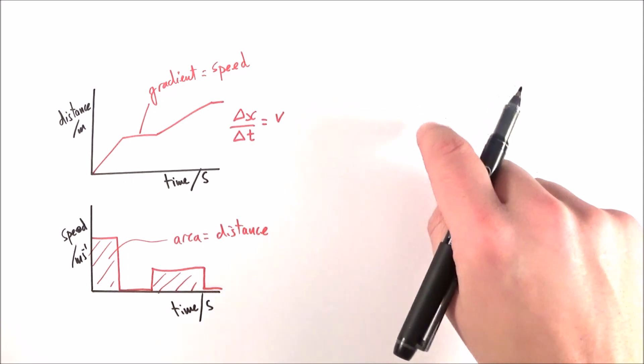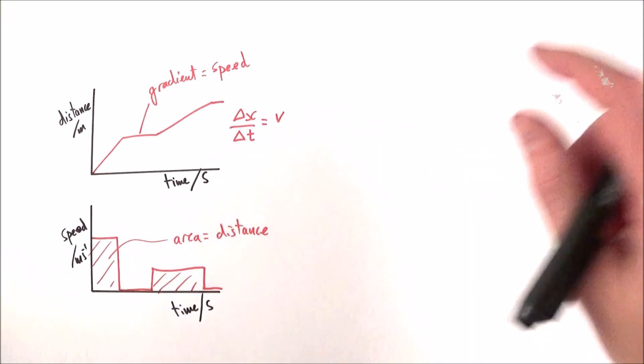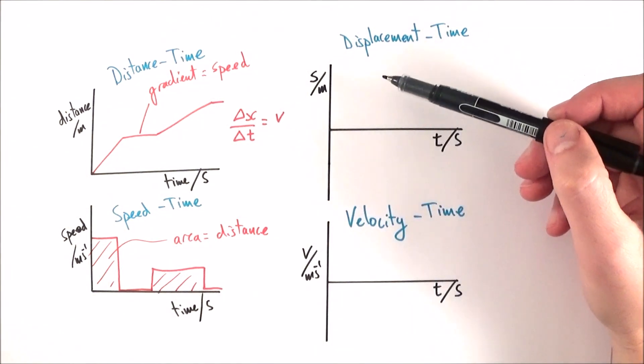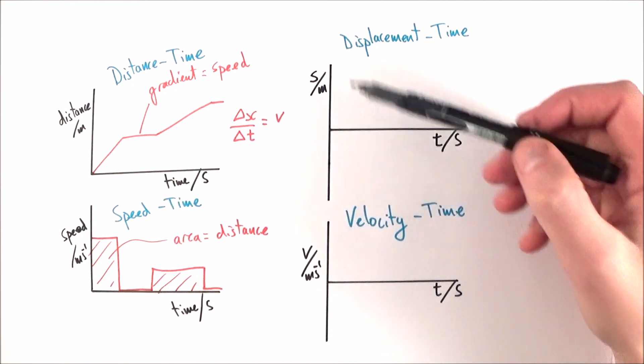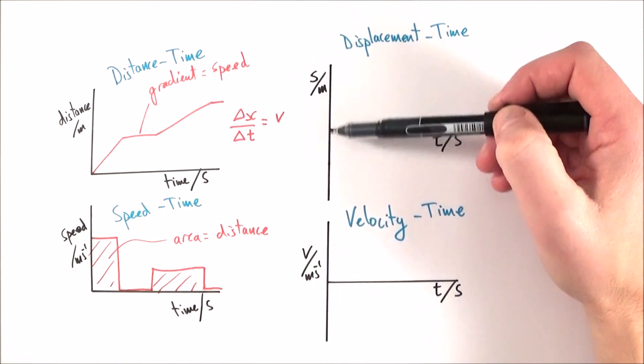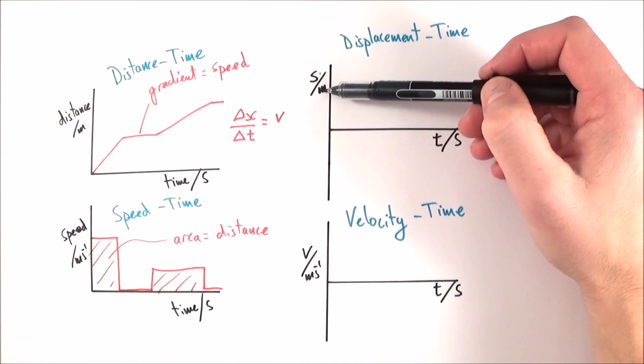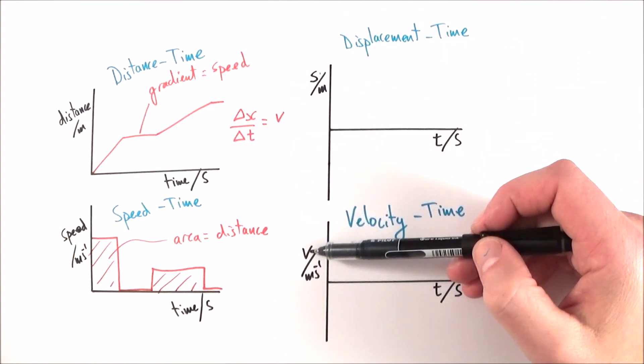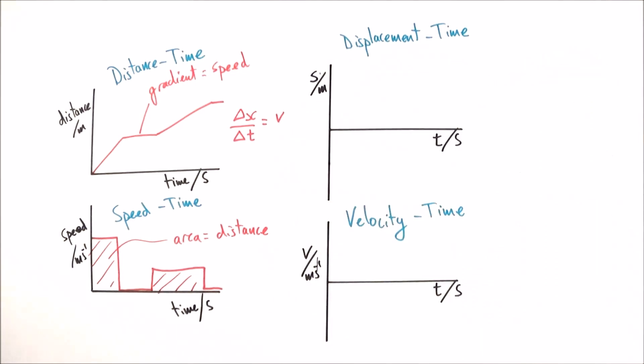So what I'd like to do now is have a velocity time graph and also a displacement time graph. Here we have an example of a displacement time and a velocity time graph. Now one of the important differences is that we've got a displacement that can be positive or negative, and here the unit is s for displacement, measured in metres, and we also have the velocity v measured in metres per second. Both of these values can be positive and negative.